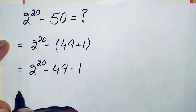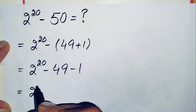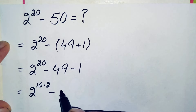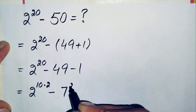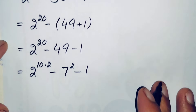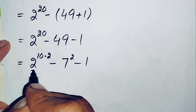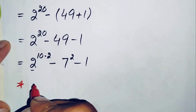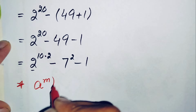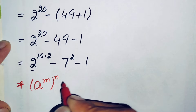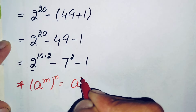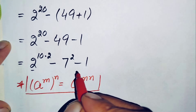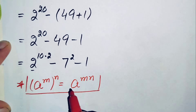We can write 2 raised to power 20 as 2 raised to power 10 times 2, and 49 can be written as 7 squared. We will use the exponential property: R raised to power m, raised to power n, equals R raised to power m times n. Using this property, the expression becomes 2 raised to power 10, whole squared.